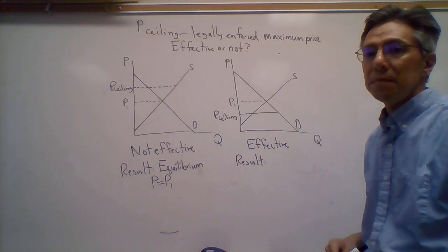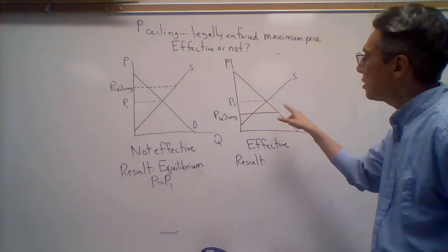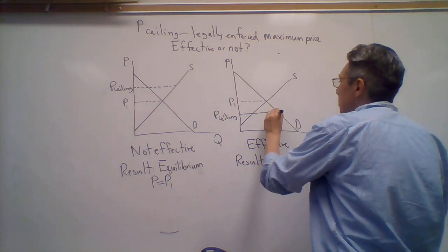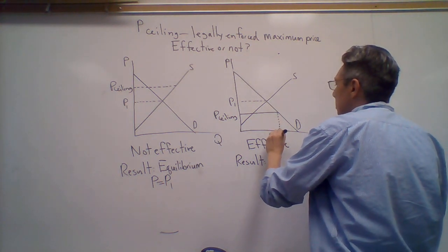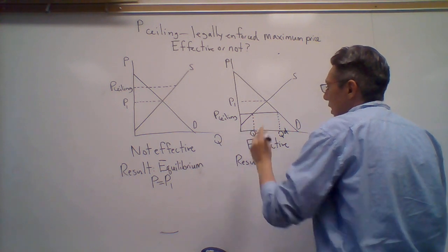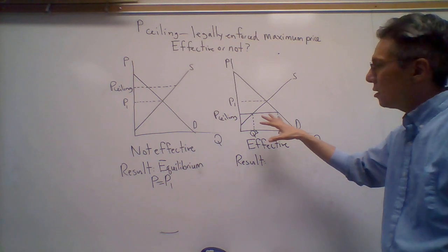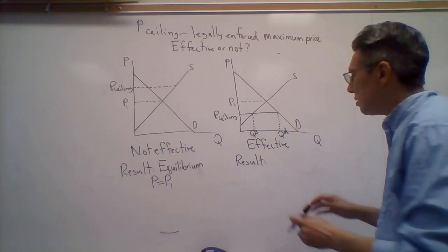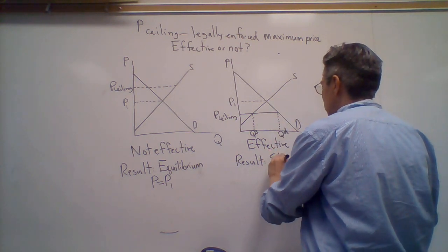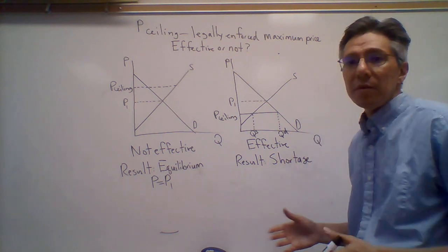So the question then is: what is the result? The result here, as we can see, well, again, remember we look at the quantities. We can say price is something like this—the quantity demanded is here on the demand curve and the quantity supplied is there from the supply curve. And so what do we have in that case? We have a shortage.